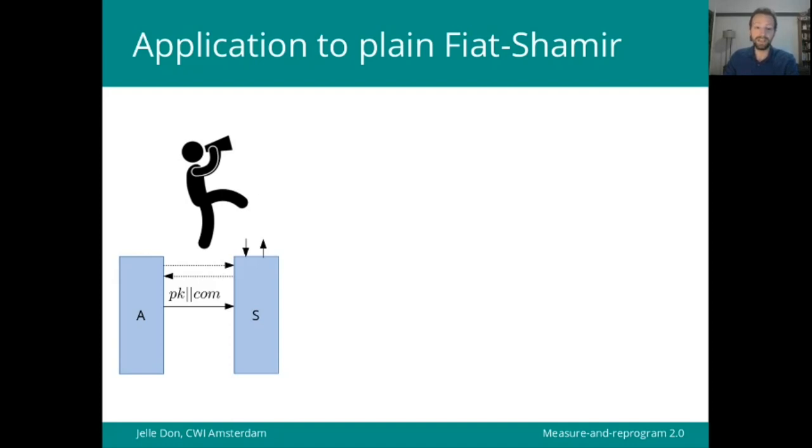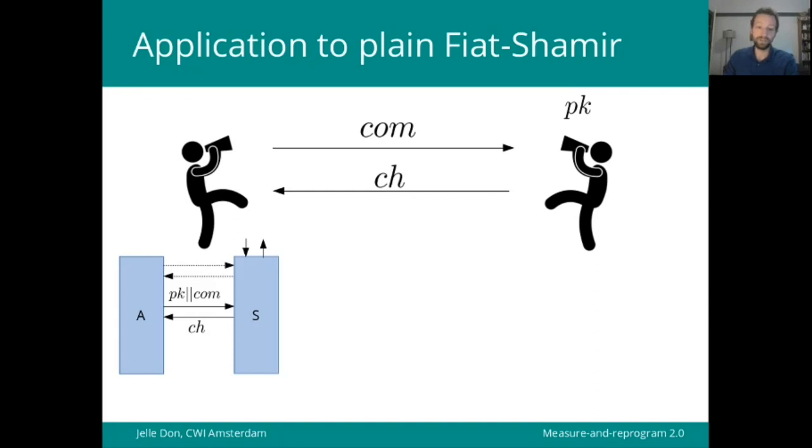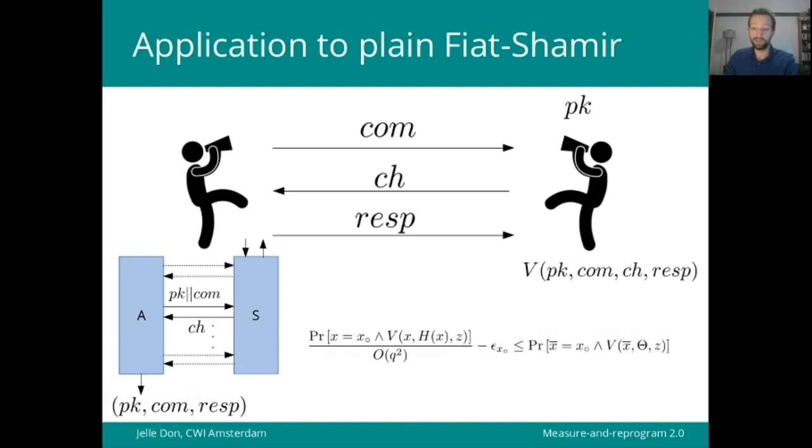Which means that we can start up an interactive protocol by running the adversary as a subroutine and just wait until the particular query comes up that we have chosen randomly to measure. Once we've measured it, we have a public key and a commitment, so we can send that to the interactive verifier. The challenge that we get in return, we program into the oracle and feed it back to the adversary. Now we just have to wait for the adversary to finish, and we get a response which we then forward back to the verifier. With this inequality at hand, we know that the probability that this response is correct with respect to this challenge, which is represented here by theta, is approximately the same up to this q squared loss as the probability that the original adversary can break the non-interactive Fiat-Shamir scheme.